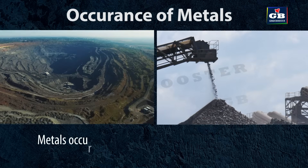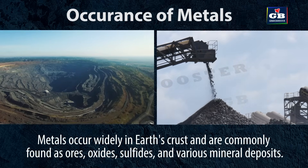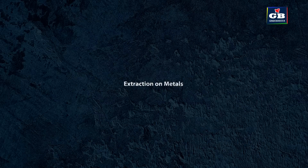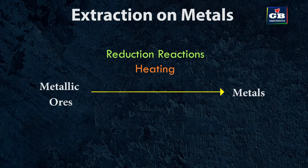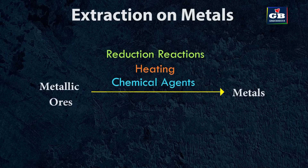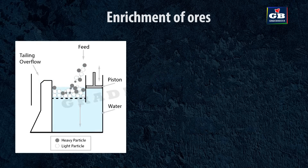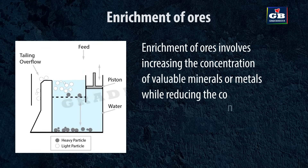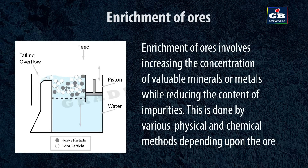Occurrence of metals: metals occur widely in the earth's crust and are commonly found as ores, oxides, sulfides and various mineral deposits. Extraction of metals: metals are extracted from their ores through processes involving reduction reactions, often utilizing heat and chemical agents to obtain the desired metal in a purified form. The first step in extraction of metals is enrichment of ores, which involves increasing the concentration of valuable minerals or metals while reducing impurities, using various physical and chemical methods depending upon the ore.